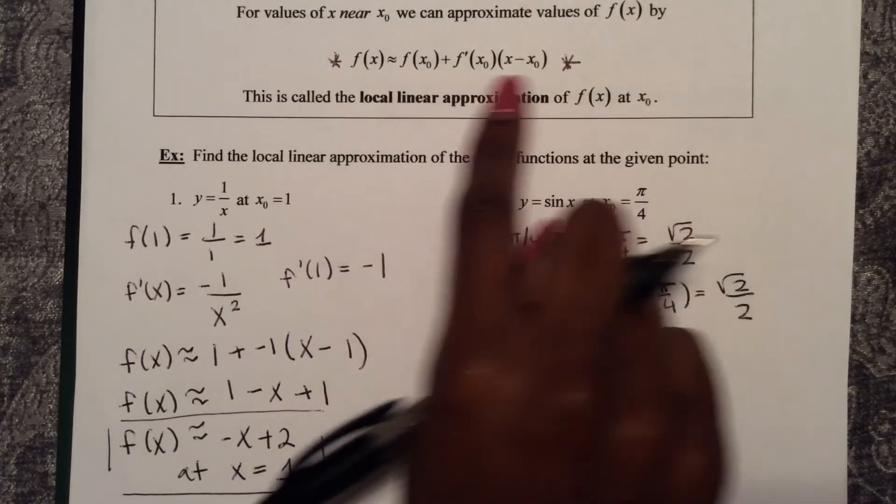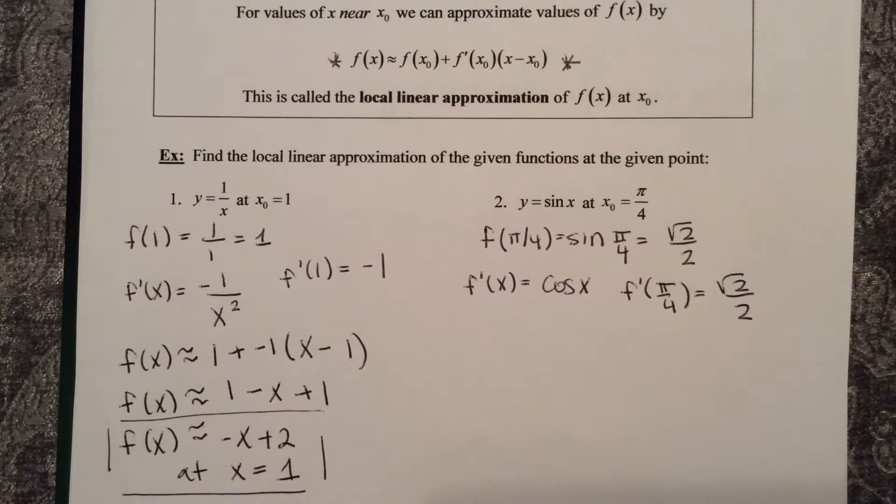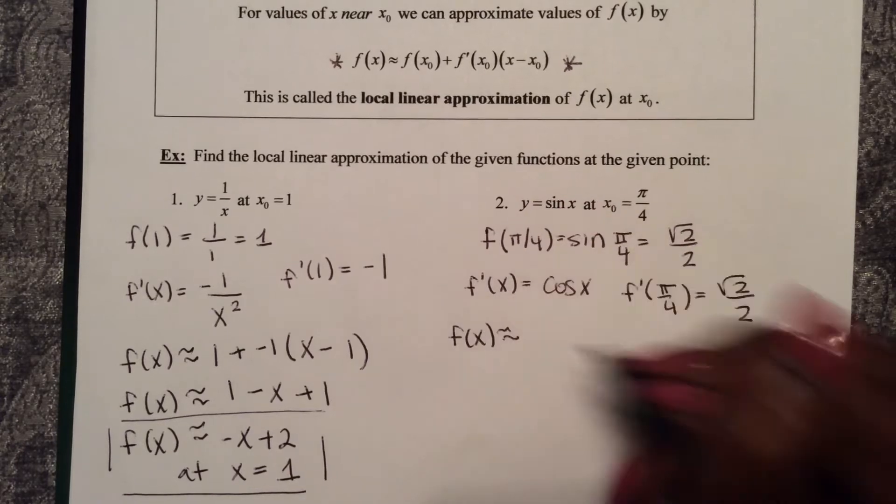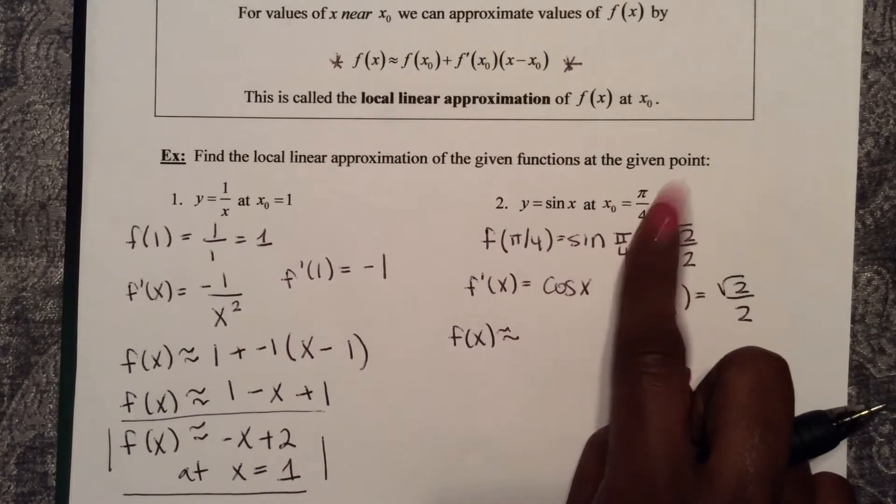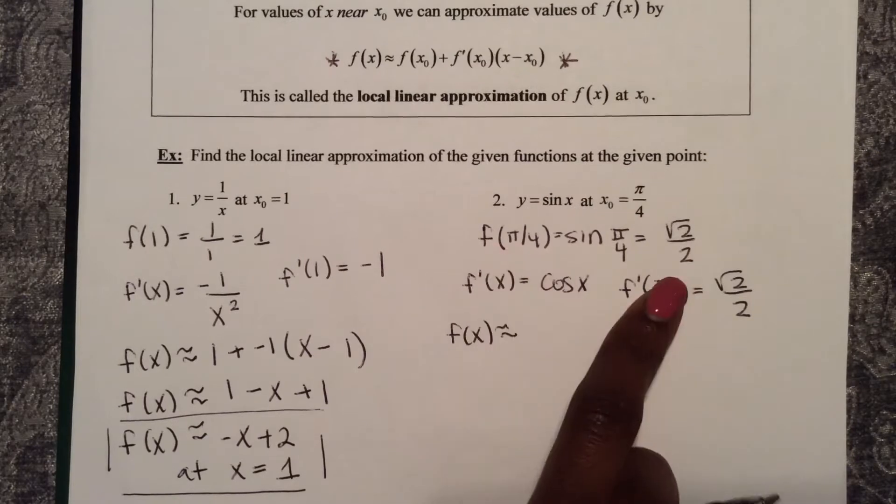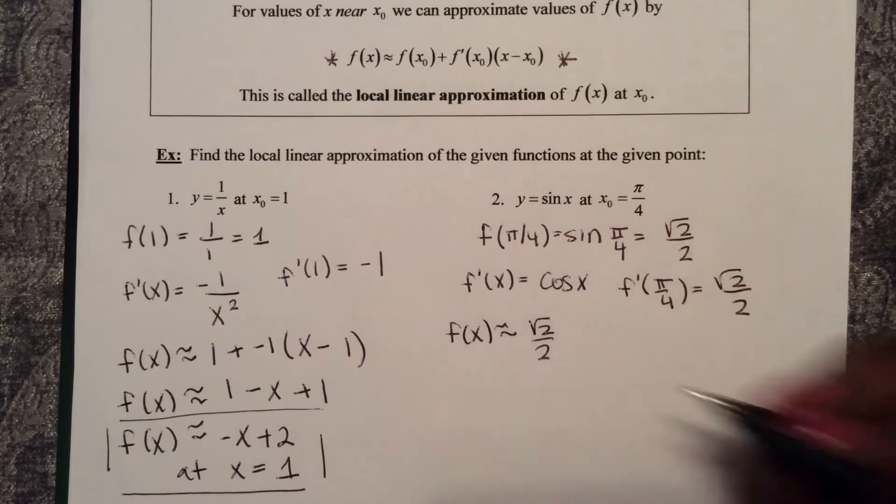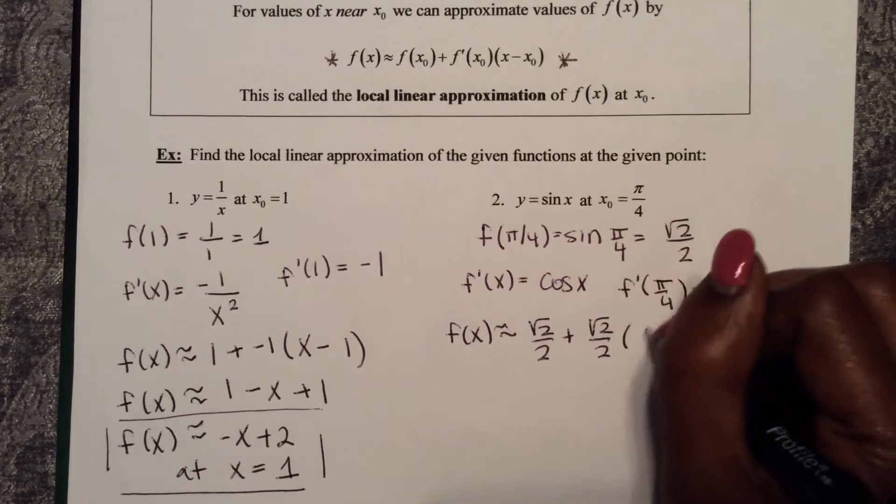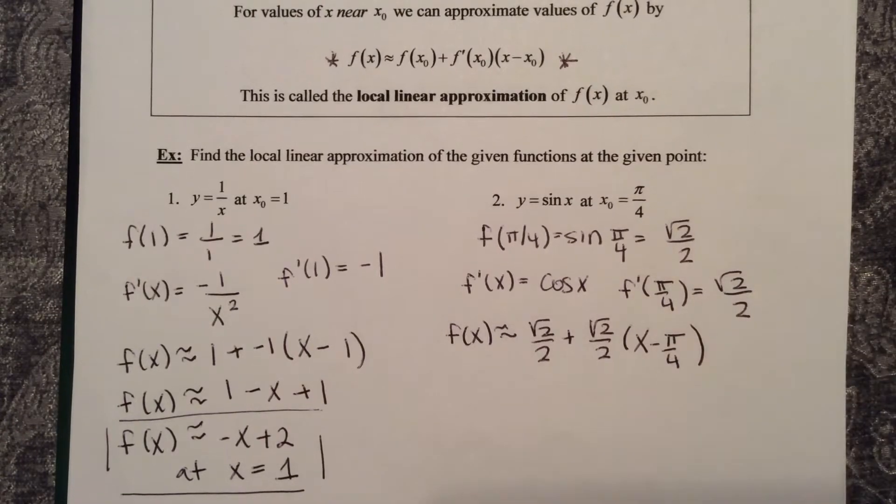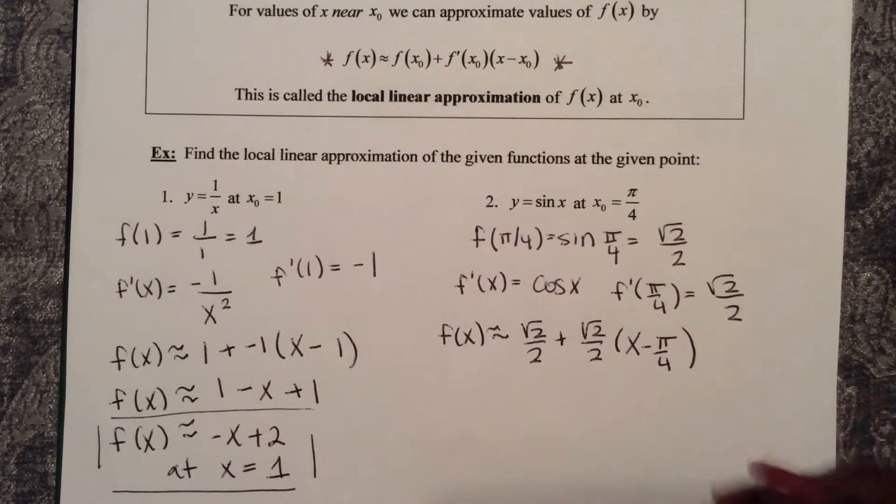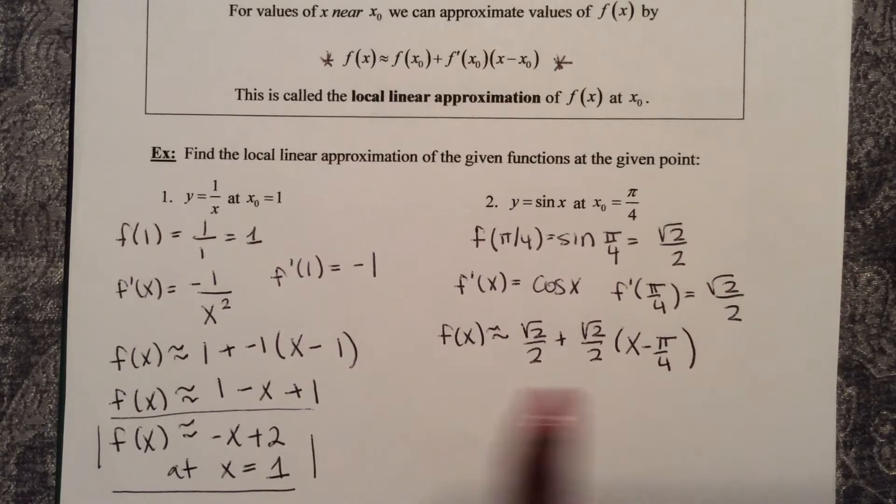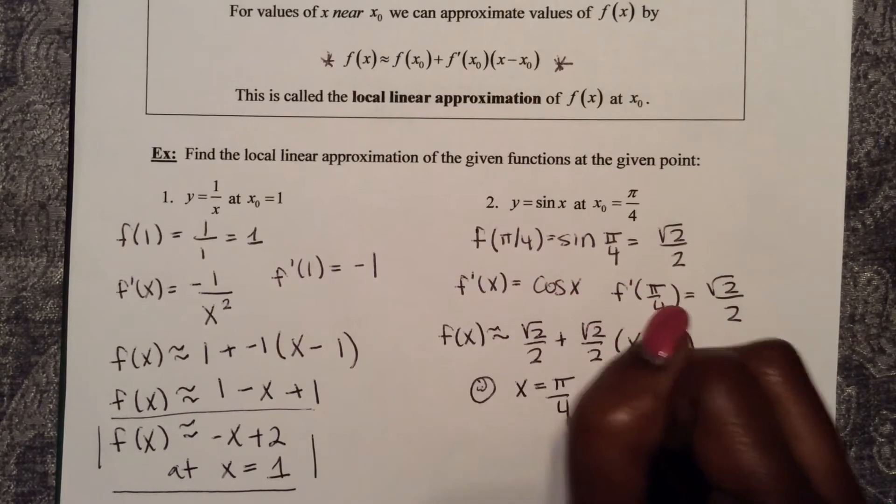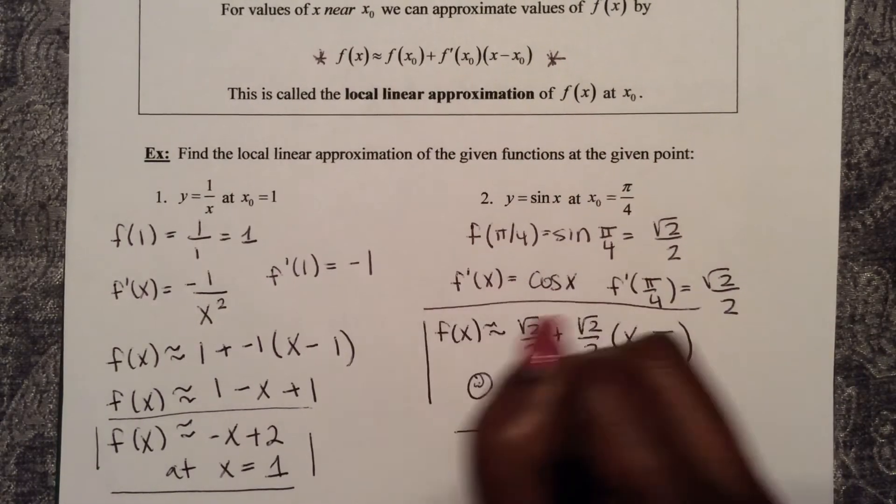So now I have all the pieces I need to locally approximate linearly my function. f of x is approximated as f of pi over 4, which is square root 2 over 2, plus f prime of pi over 4, which is square root 2 over 2, times x minus pi over 4. I really can't simplify much more, so I'm going to leave it like this at x equals pi over 4. So this is my linear approximation.